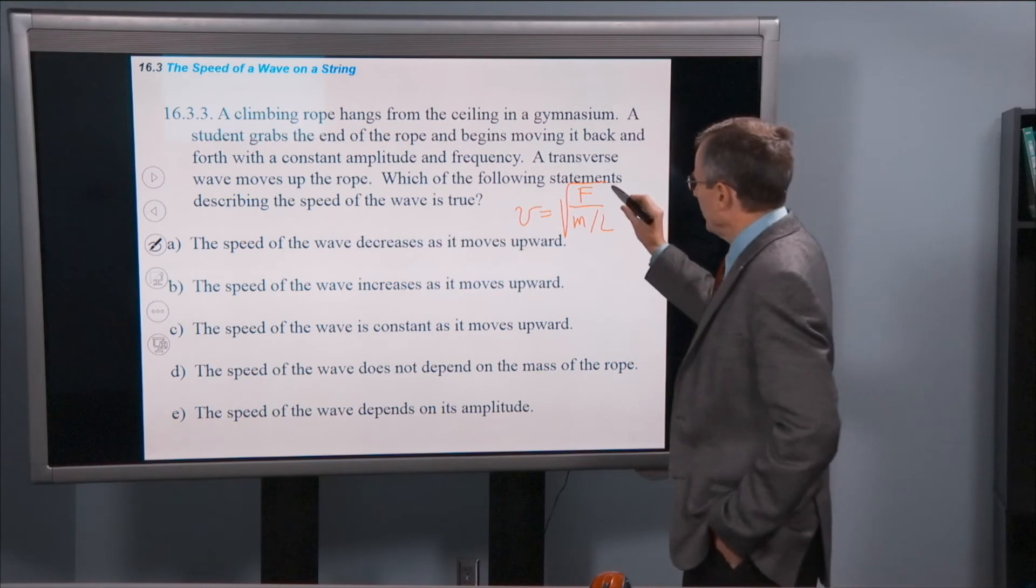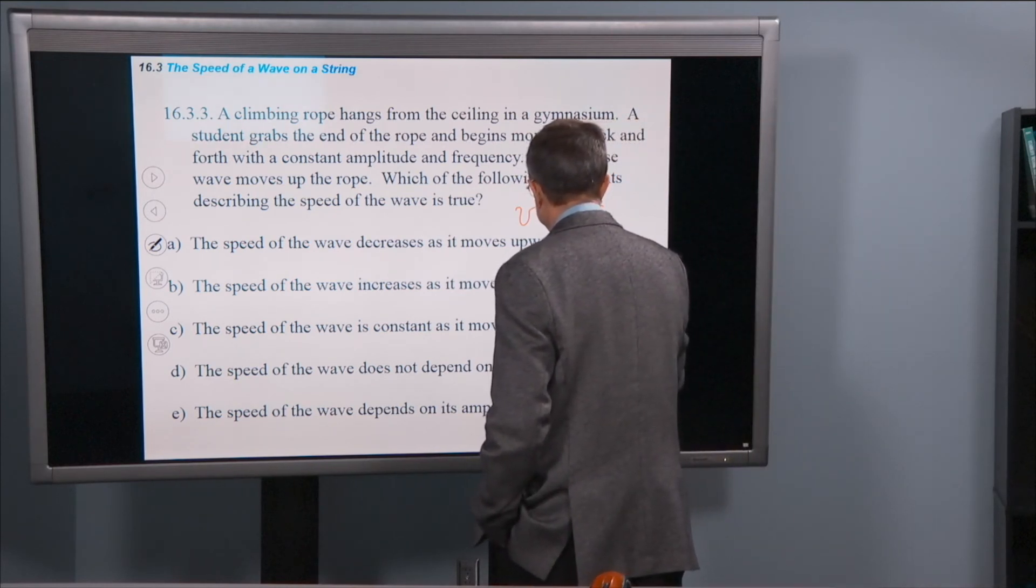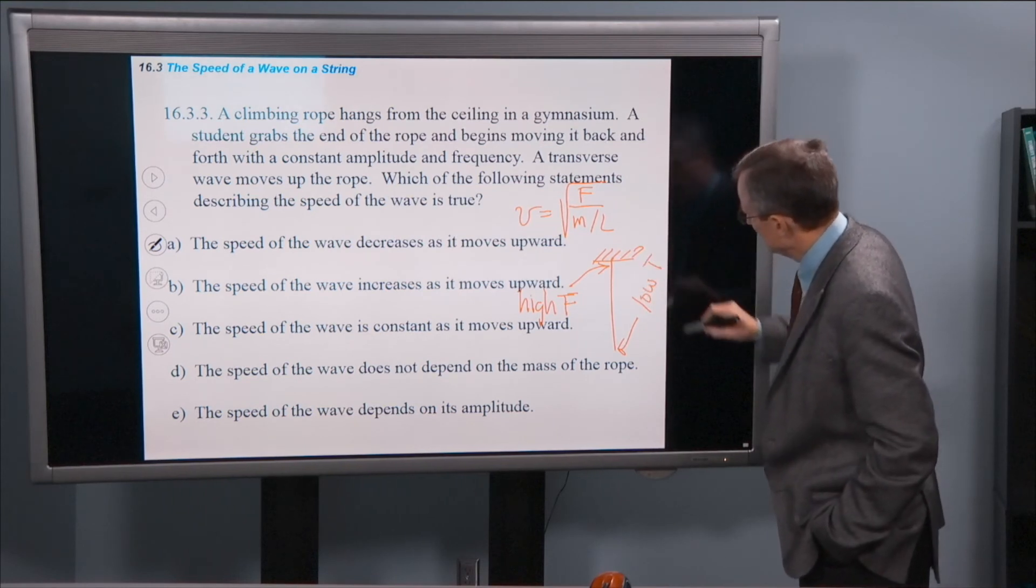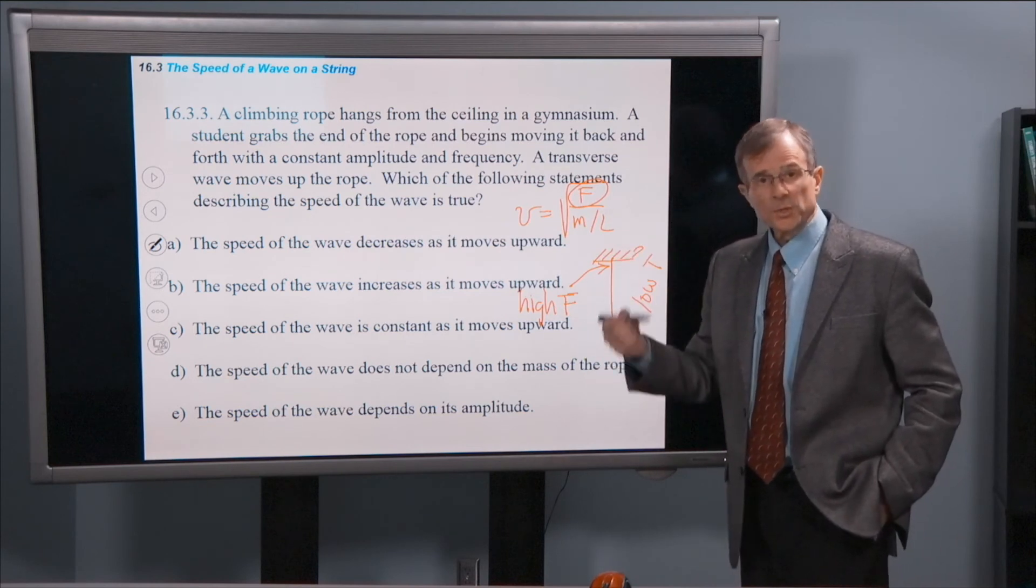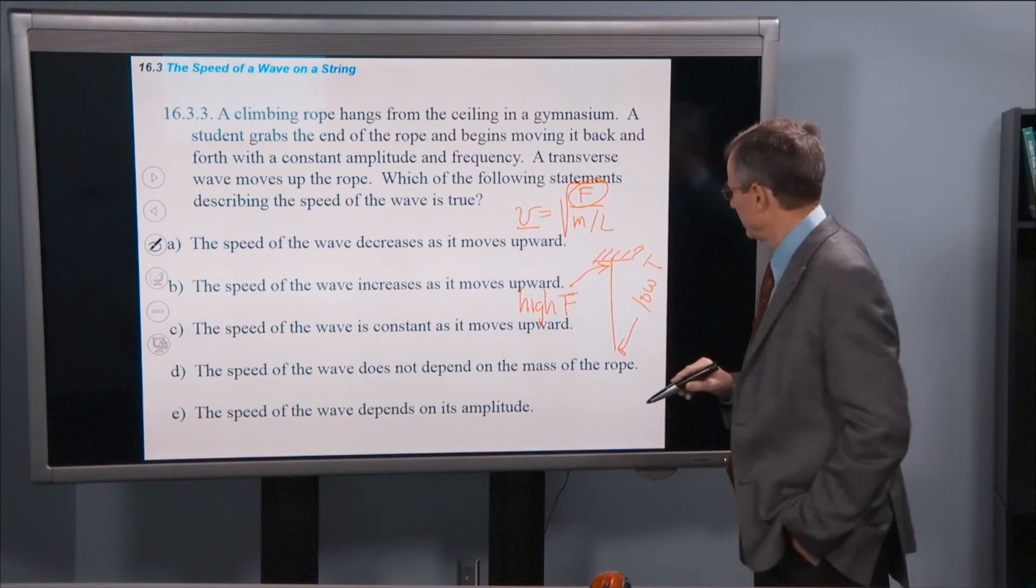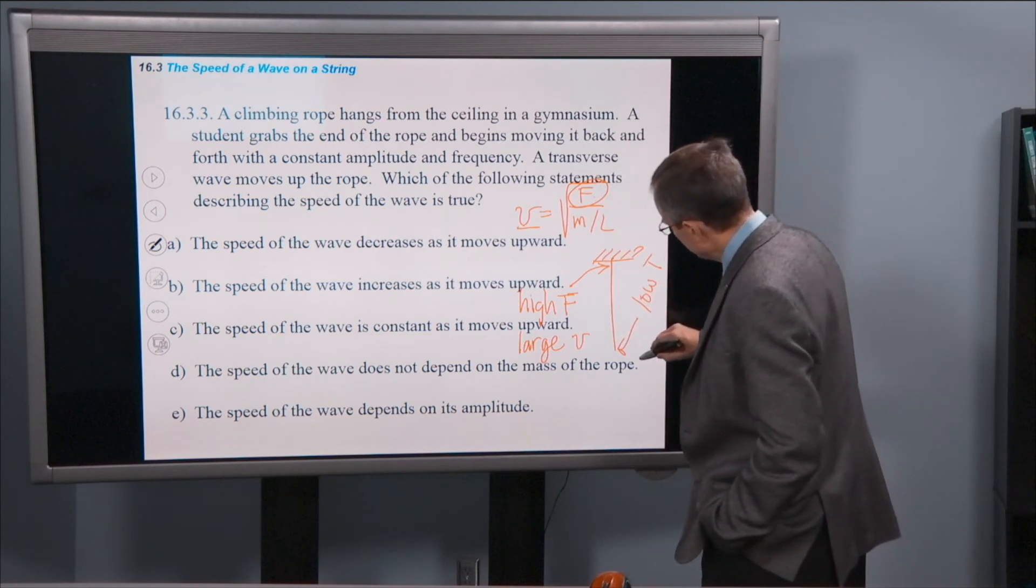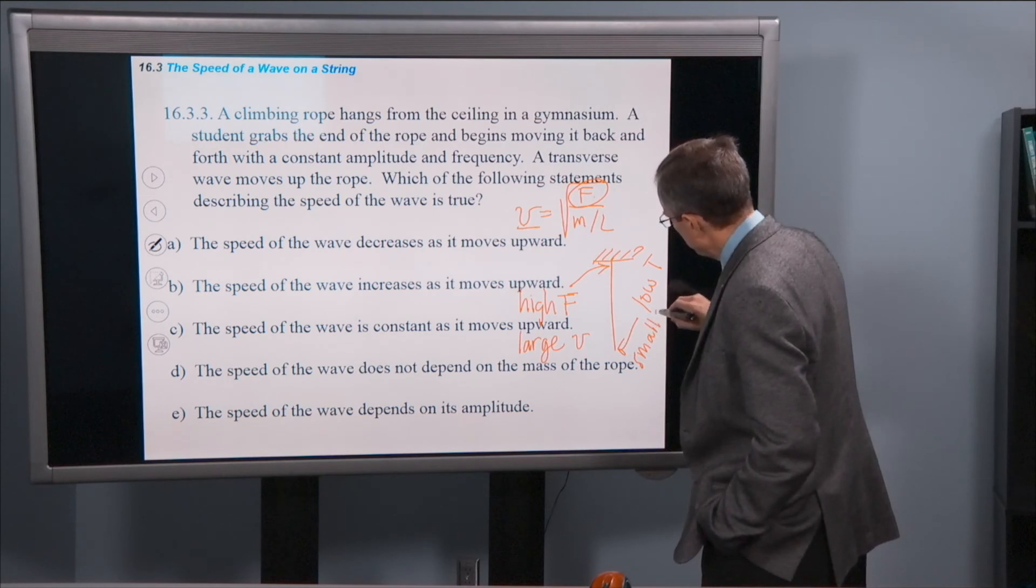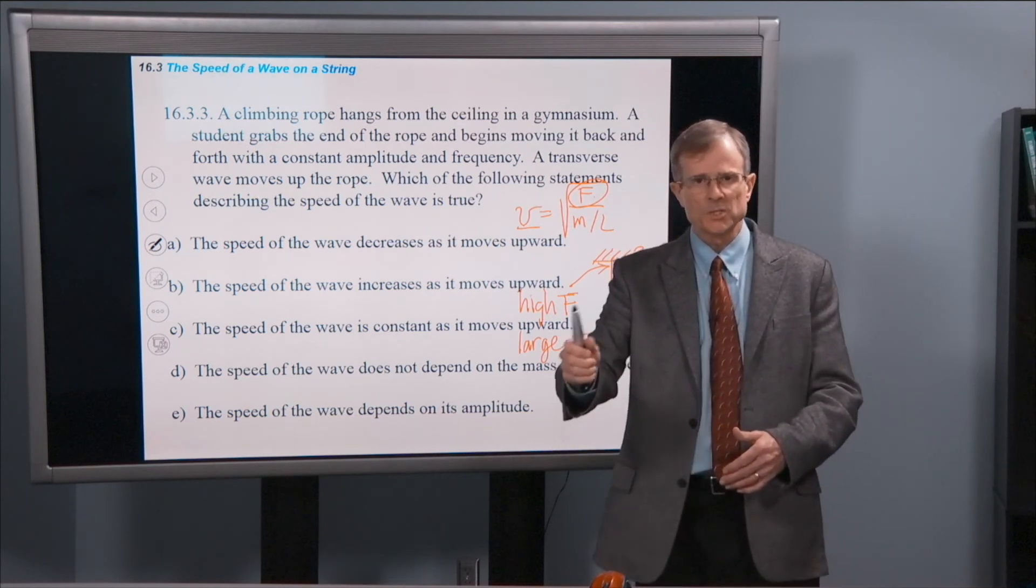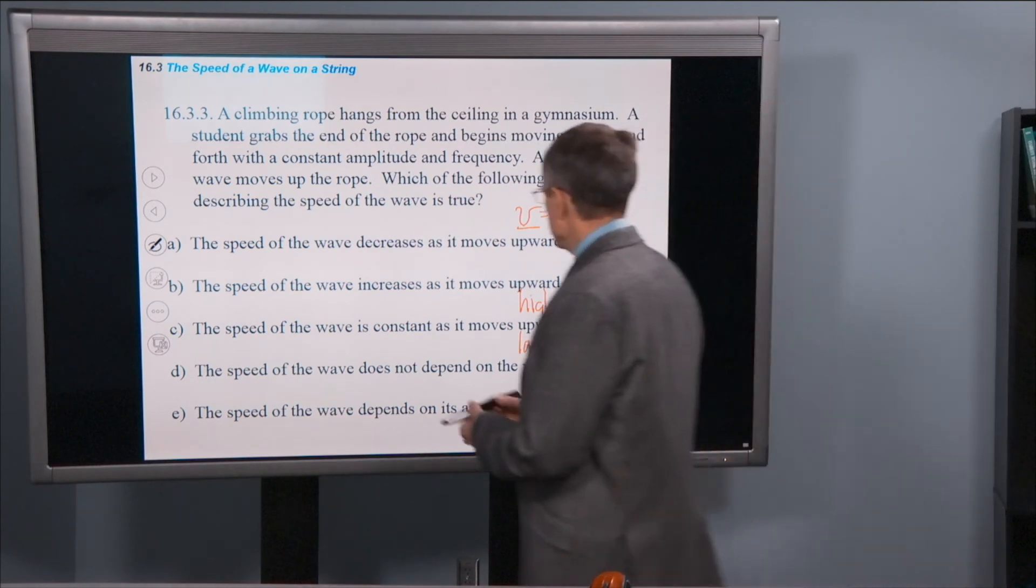Well, what does that do? What does that do to the velocity? Well, the tension, so here's the rope hanging from the ceiling and this is at a high tension. And down here at the end, it's at a low tension. Well, the speed is proportional to the square root of the tension. And so this speed at the top is going to be high, so large velocity. And here at the bottom, it's going to be a small velocity. So what will happen when you jiggle the end of that rope from the bottom, the wave will propagate slowly at the start and then speed up as it moves up the string. So the speed increases as it moves upward. So this would be the answer here.